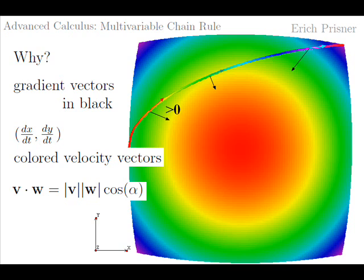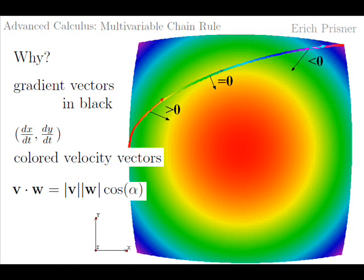Remember that the scalar product of two vectors is the product of the two magnitudes times the cosine of the angle. This cosine is positive at the first point shown, so the scalar product is positive and we gain height. The angle is 90 degrees at the second point, so the cosine is zero and we neither gain nor lose height. The cosine is negative at the third point, so we lose height there. And of course, the higher the magnitude of the gradient and the magnitude of the velocity, the higher the result. So the formula seems plausible.